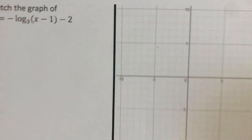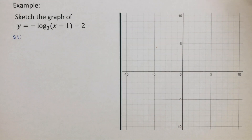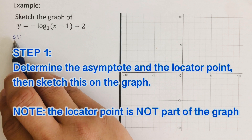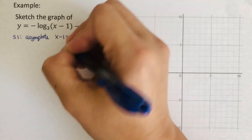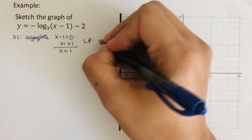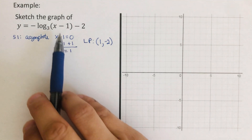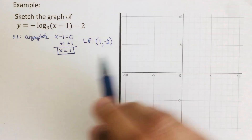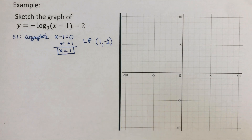I encourage you to pause the video and try the next problem on your own, then check your answer. For the second example, Step 1: we determine the asymptote by setting the expression inside the parentheses to zero and solving for x, giving x equals 1. The locator point uses switch and keep, so it becomes (1, negative 2). We sketch the asymptote and mark the locator point on the graph.